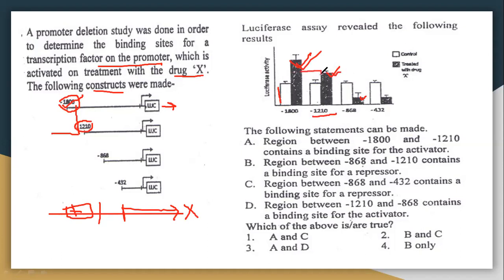For the minus 868 region, when this region is deleted completely, the expression with drug treatment decreases to almost control level. So we can say that the region between minus 1800 and minus 1210 contains a binding site for an activator, because in that region the expression is maximum.